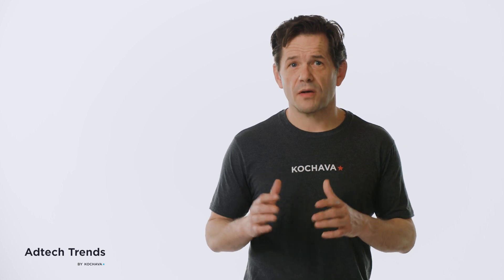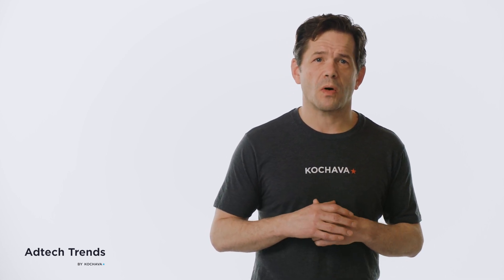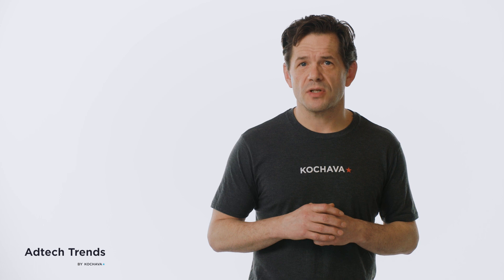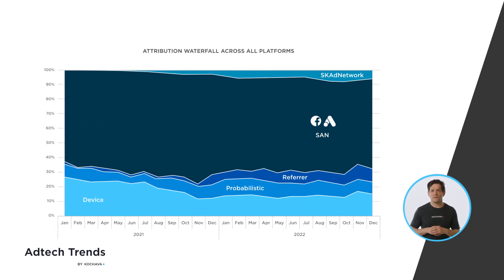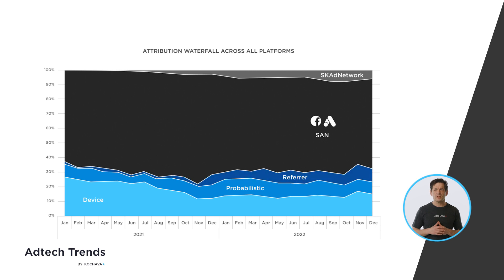So we've looked at where things are attributing — now let's look at how, or the method by which attribution is coming in. From the bottom of this chart, you see that device is still a significant source at about 20%, and we see that probabilism is growing just a bit on the back of owned media, as brands try to get more out of their own data. Here's an interesting segment: the referrer sliver, which you can see is growing modestly. This is something most people aren't paying attention to, but there are some interesting rules, particularly in the Google Play Store.